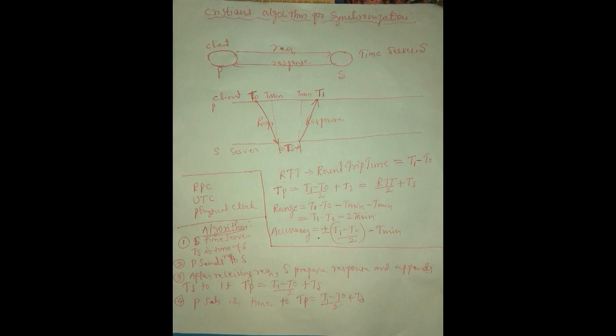t1 minus t0 is the round trip time. Dividing by two and adding ts gives tp. The range calculation is: (t1 - t0) - 2 * tmin, where the two tmin values represent the minimum time consumed by the client and the server. Accuracy is calculated as plus or minus ((t1 - t0) / 2 - tmin).